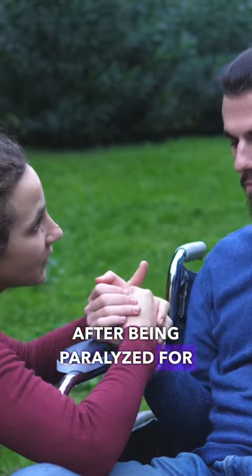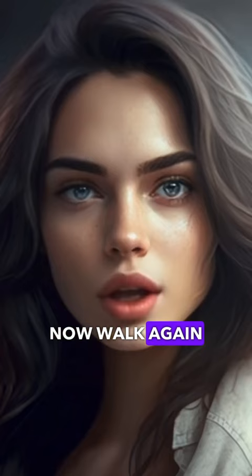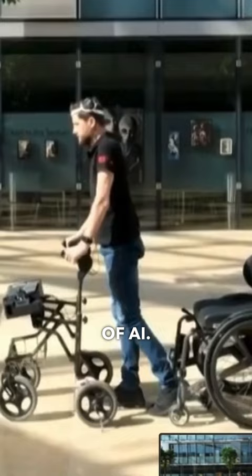After being paralyzed for 12 years, this man can now walk again with the help of AI. His name is Gert Jan Oskum, and he was in a cycling accident that damaged his spinal cord.